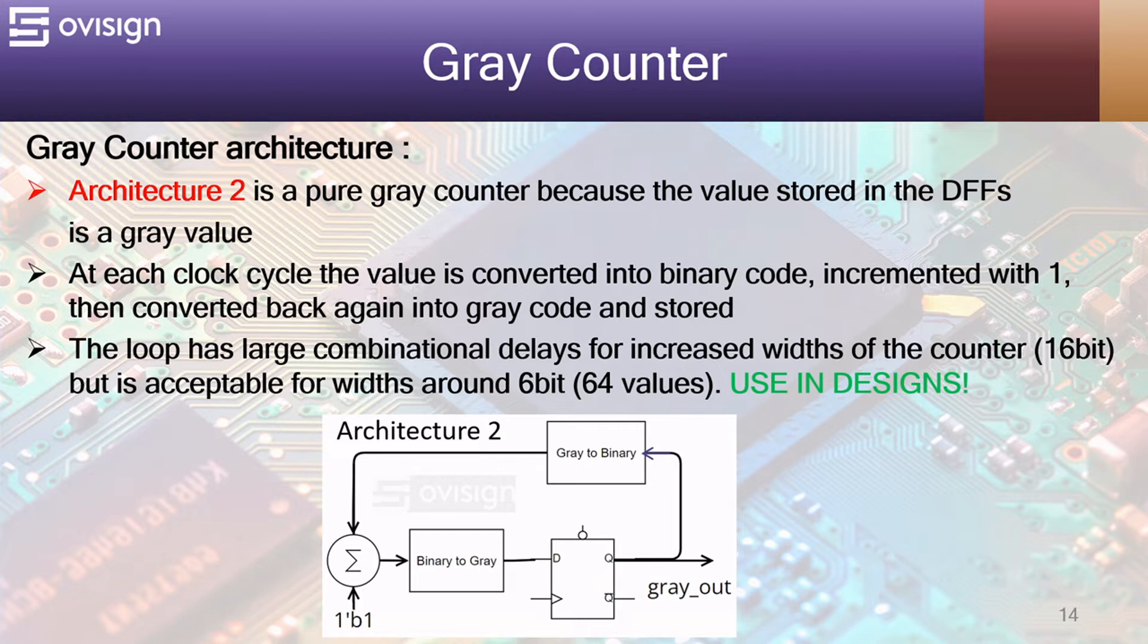The loop has large combinational delays for increased widths of the counter, like for 16-bit, but is acceptable for widths around 6-bit, which means 64 values. A FIFO with 64 locations may be more than enough for low data-rate digital modules.